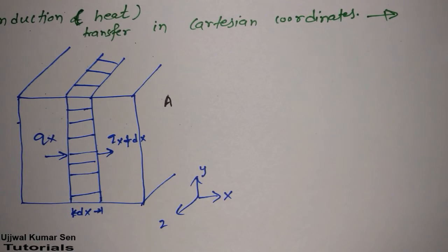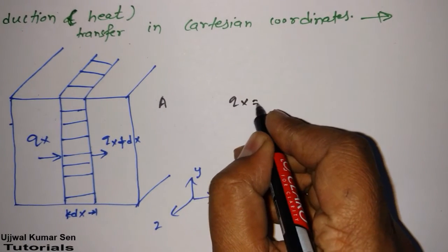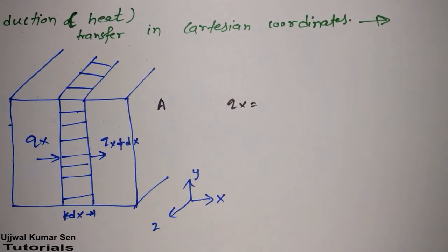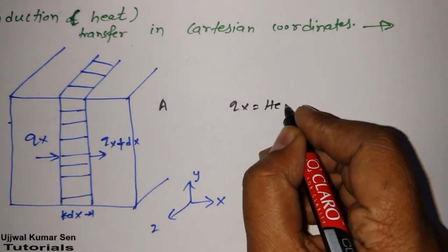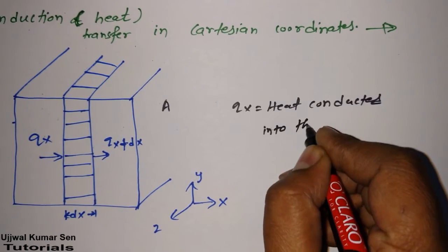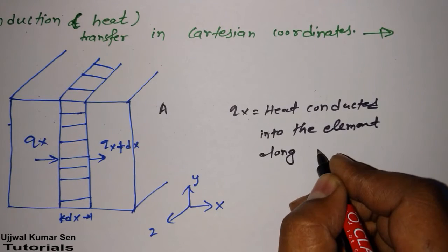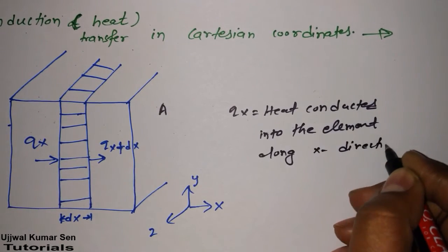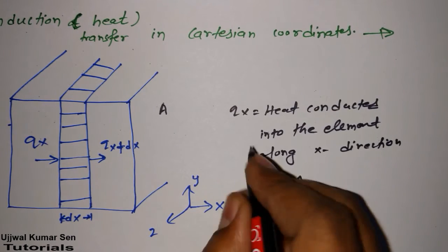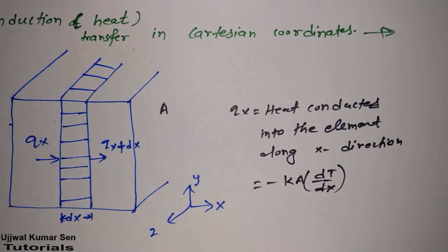First of all, consider a differential element of the slab of length DX as shown in the figure. QX is equal to heat conducted into the element along the X direction. We know that QX = −KA (dT/dx). This is the first equation, known as Fourier's law of heat transfer.